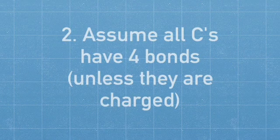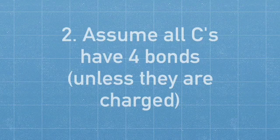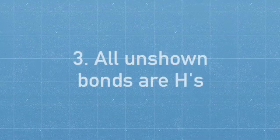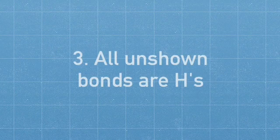The second rule is assume that all the carbons have four bonds unless they are charged. The third rule is that all unshown bonds are hydrogen bonds.